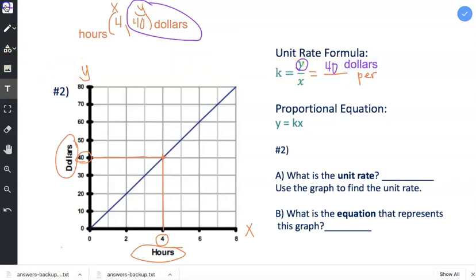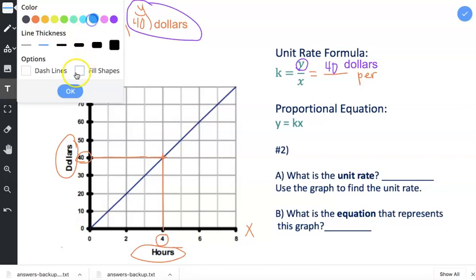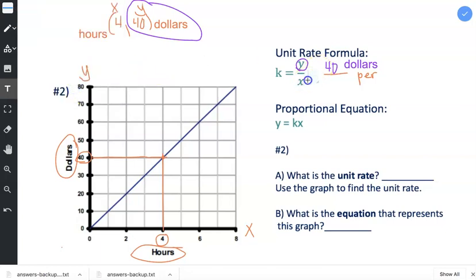And then I'll grab a different color. And I need to identify my x value. My x value is 4, and it's 4 hours. So I'll type hours.